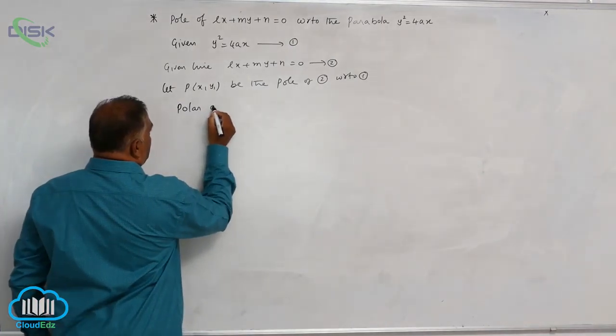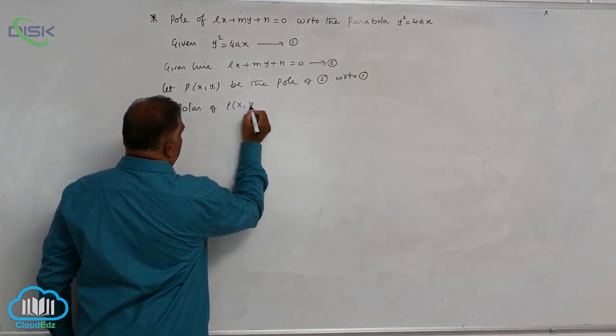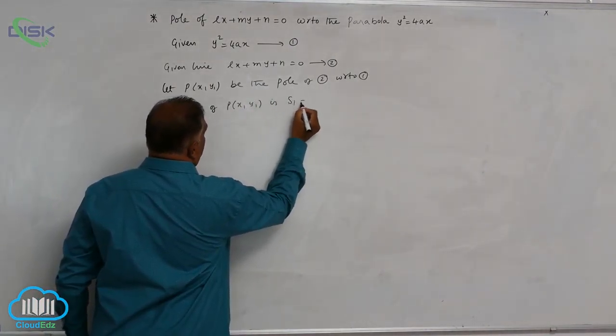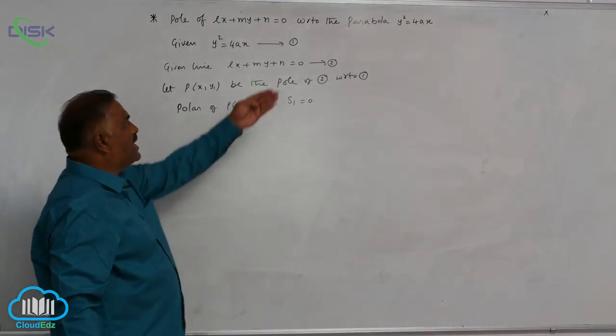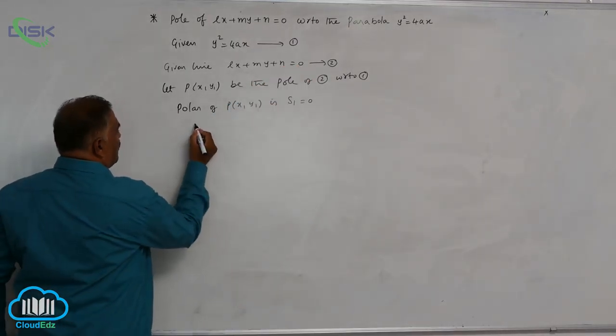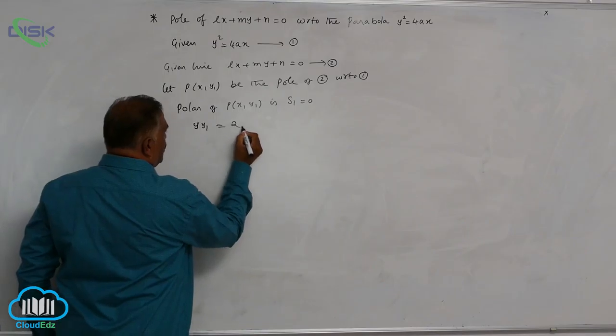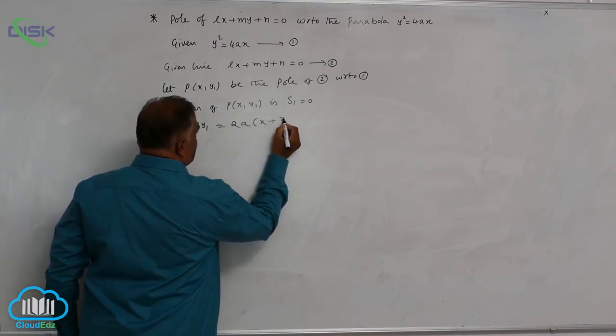Polar of P(x1, y1) is S1 is equal to 0. For the standard parabola, it is yy1 is equal to 2A into x plus x1.